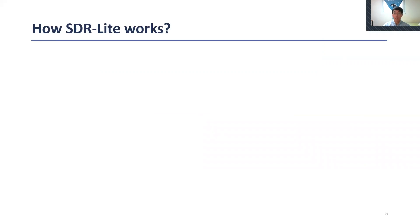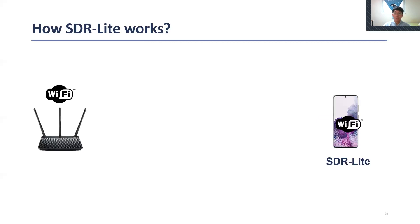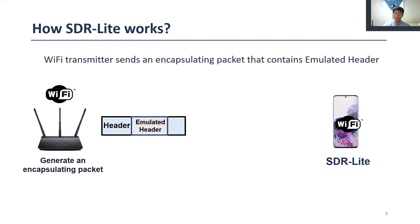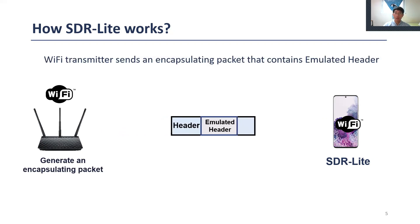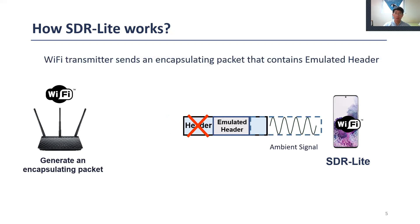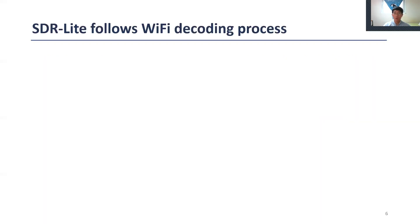Now let me explain the overall workflow of SDR Lite. SDR Lite is triggered by a packet from another commodity Wi-Fi. This Wi-Fi device generates and sends an encapsulating packet that has a short payload holding an emulated header. When the Wi-Fi sender transmits a packet, SDR Lite bypasses the original header and receives the emulated header plus an ambient signal. SDR Lite then decodes the ambient signal following the Wi-Fi standard.